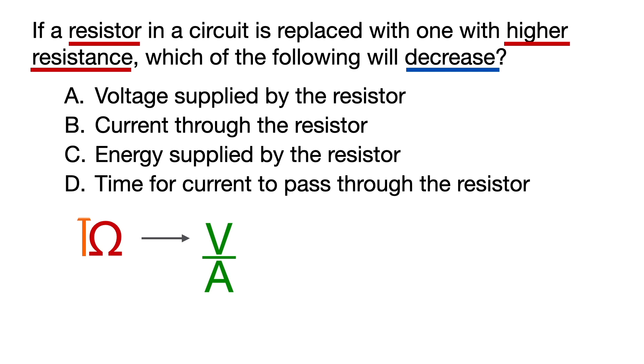If resistance increases, voltage will also increase because ohms and volts are directly related to each other, so we can eliminate A. Also, with the same units, we can see that if resistance increases, current will decrease because ohms and amps are inversely related to each other. So B is a possible correct answer.